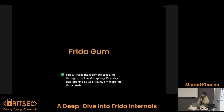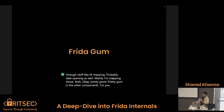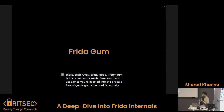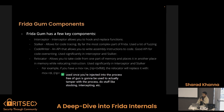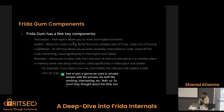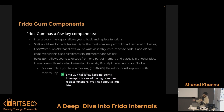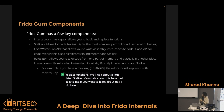Frida Gum is the other component of Frida that's used once you're injected into the process. Frida Gum is going to be used to actually tamper with the process — do stuff like stalking, intercepting, etc. Frida Gum has a few key components. Interceptor is one of the big ones — it's used to hook and replace functions. Stalker — I'm not going to talk about this here, but talk to me if you want to learn about it. Stalker is mainly used for code tracing and a lot for fuzzing.